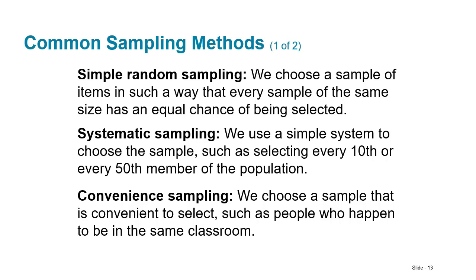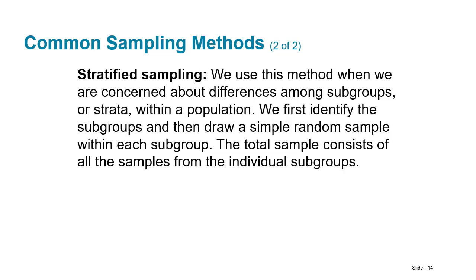Convenience sampling is when you sample things that are convenient to you — like surveying just the students in your classroom, or asking the first 20 students outside the rec center. These are bad samples. Really, anything other than a simple random sample has problems and inherent biases.